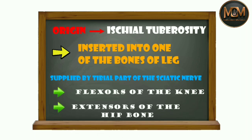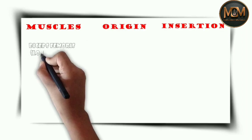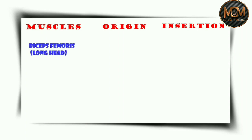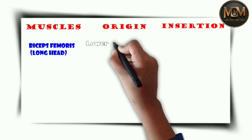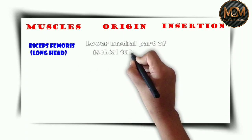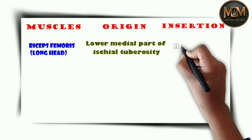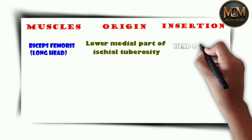Now let's look at the biceps femoris muscle. The origin of this muscle is the lower medial part of the ischial tuberosity, and it is inserted into the head of the fibula.